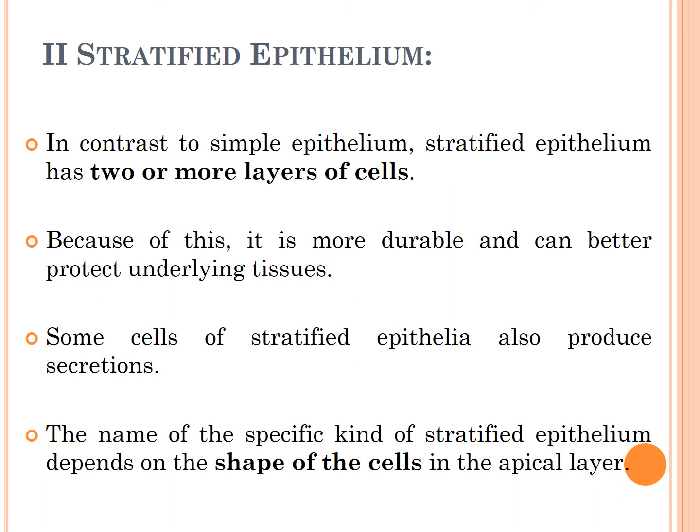The second part of epithelial tissue classification is stratified epithelium. In contrast to simple epithelium, stratified epithelium contains two or more layers. Because of this, it is more durable and can better protect underlying tissue. Simple epithelium contains a single layer, while stratified epithelium contains more than one layer. The name of a specific kind of stratified epithelium depends on the shape of the cells in the apical layer.